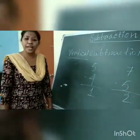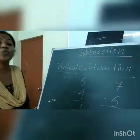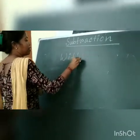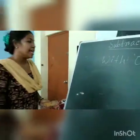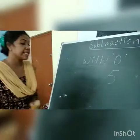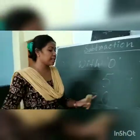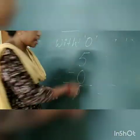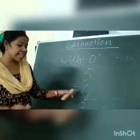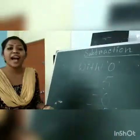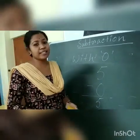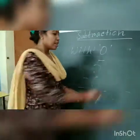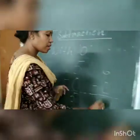Now we will learn subtraction with 0. If we subtract 0 from any number, the answer will be the same number. For example, if I take 0 from the number 5, what do I get? 5 — because nothing is taken away from the 5, so the answer will also be 5. Similarly, 6 minus 0 equals 6.